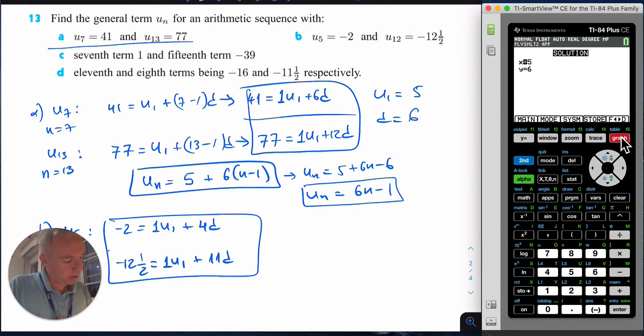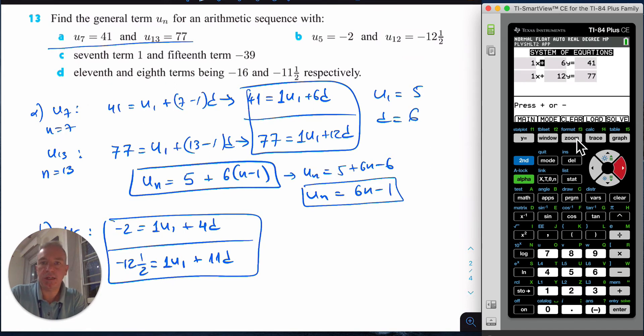I get my systems, so I'm going to press system on my calculator. 1x + 4y = -2, and then the second system 1x + 11y. Let me clear this and use the mixed fraction which is -12 and 1/2.